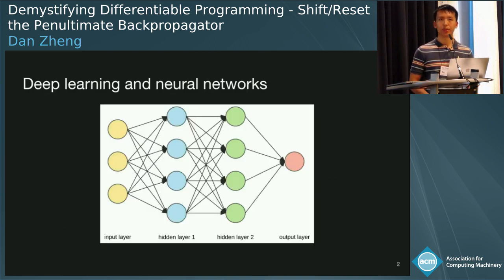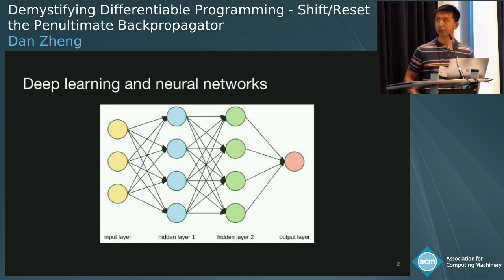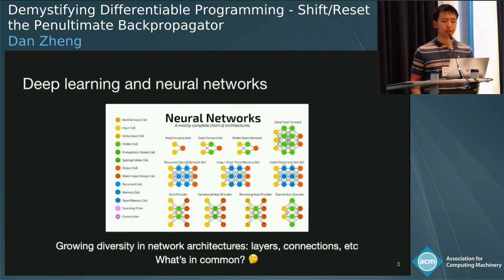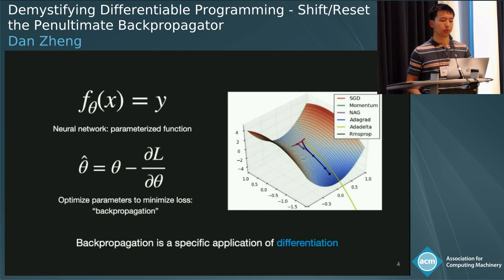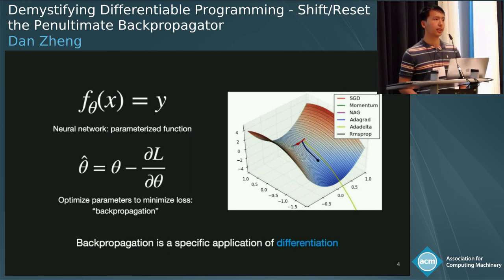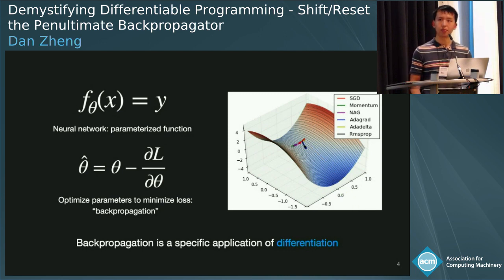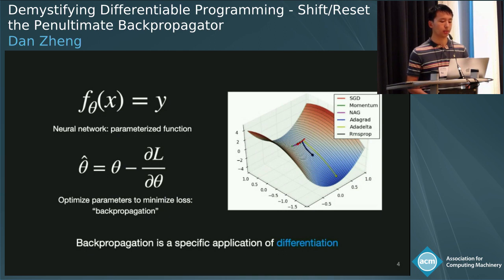Let me start by talking about deep learning and neural networks. Deep learning and neural networks have many real-world applications. Traditionally, neural networks have been viewed as a composition of layers, and while that's true, there's a growing diversity in network architectures — many layer types and connection types. But in fact, all of these neural networks are just parameterized functions: they take in some input x, return some output y, and are parameterized based on weights. These are continuous functions, so they can be differentiated. There's an algorithm called backpropagation for training neural networks, where parameters are updated based on their derivatives to minimize the loss function. Backpropagation is a specific application of differentiation.